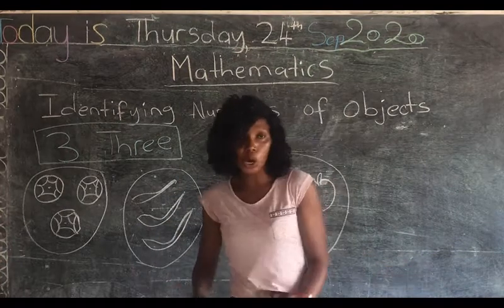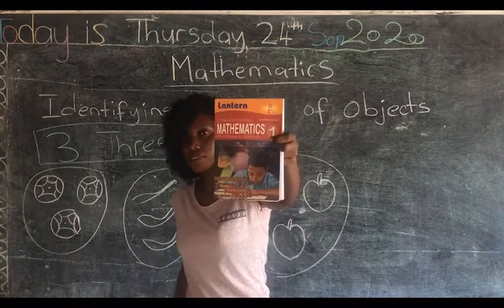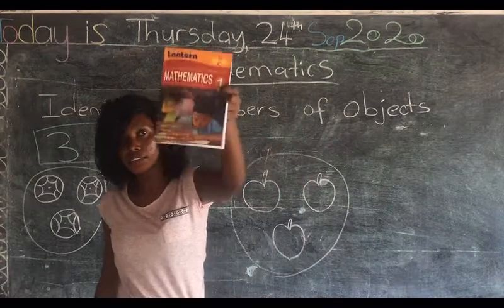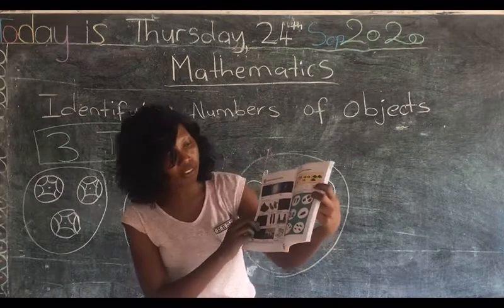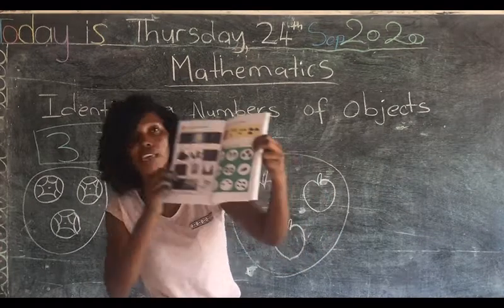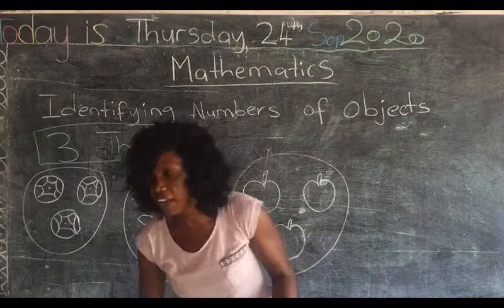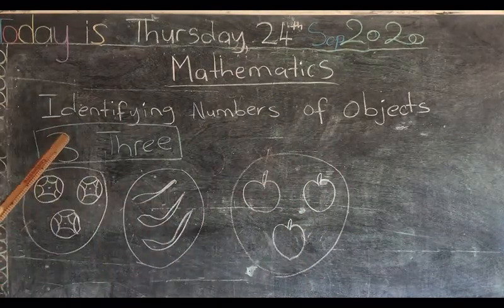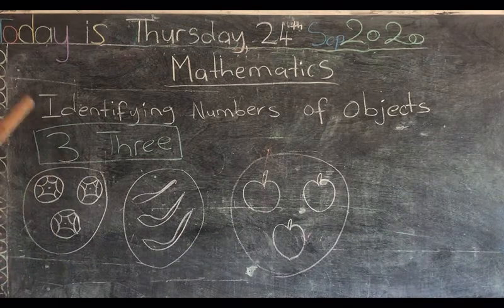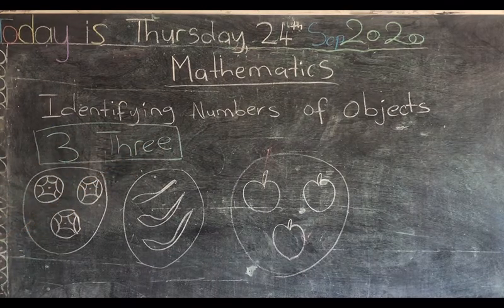The book we are looking at today is our mathematics book. The page number for today is page number five. Like I said, we are looking at number three today, after we looked at one and two. Today we have three — T-H-R-E-E, 3.